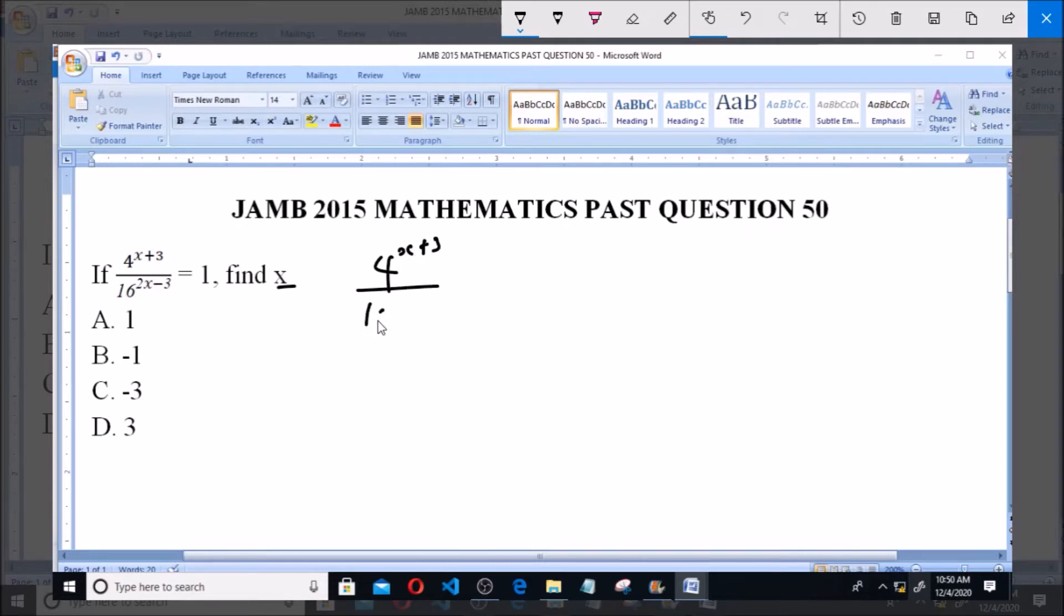So we have 4 raised to the power of x plus 3, all over 16 raised to the power of 2x minus 3, equals 1. This question is from indices. From this, splitting this, we have when we cross multiply we'll have 4 raised to the power of x plus 3 equals 16 raised to the power of 2x minus 3.